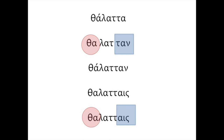Now let's change that form from thalattan — with a short alpha at the end — to the form thalatais, which ends in a diphthong: alpha-iota-sigma. This ending is long. So even though the word wants to be accented on 'tha,' it is actually pushed forward and accented on the second alpha — the penultima. One last time: if a word wants to be accented on the antepenultima, it will be if the final vowel is short. If the final vowel is long, you accent the penultima with an acute.